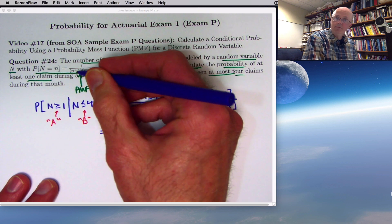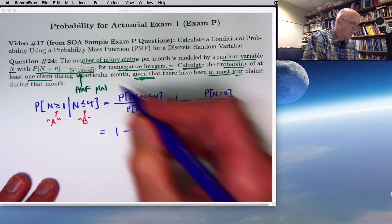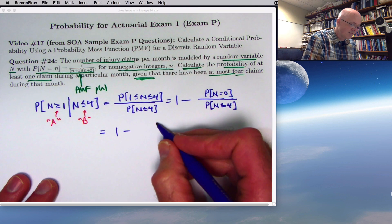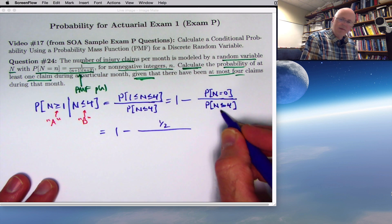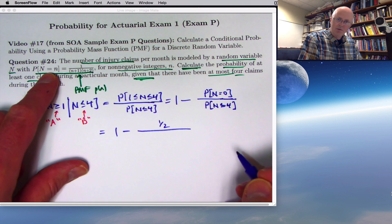So, again, you use the PMF, like I talked about verbally just a few minutes ago. To find the probability that capital N equals 0, plug in little n equals 0 here. And you get 1 half. What about this one? There's a less than or equal to there, not an equal to. Here there's an equal to.